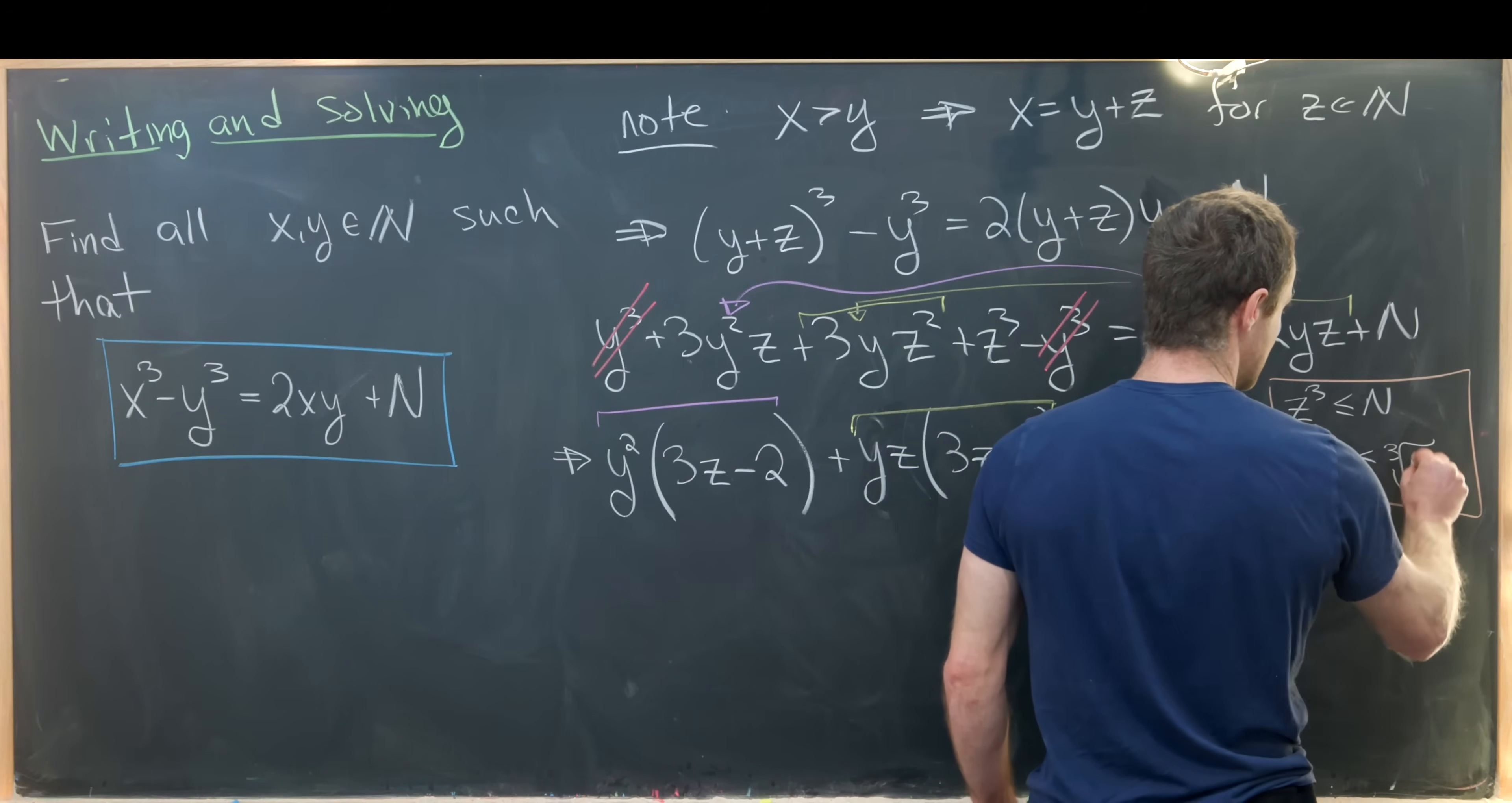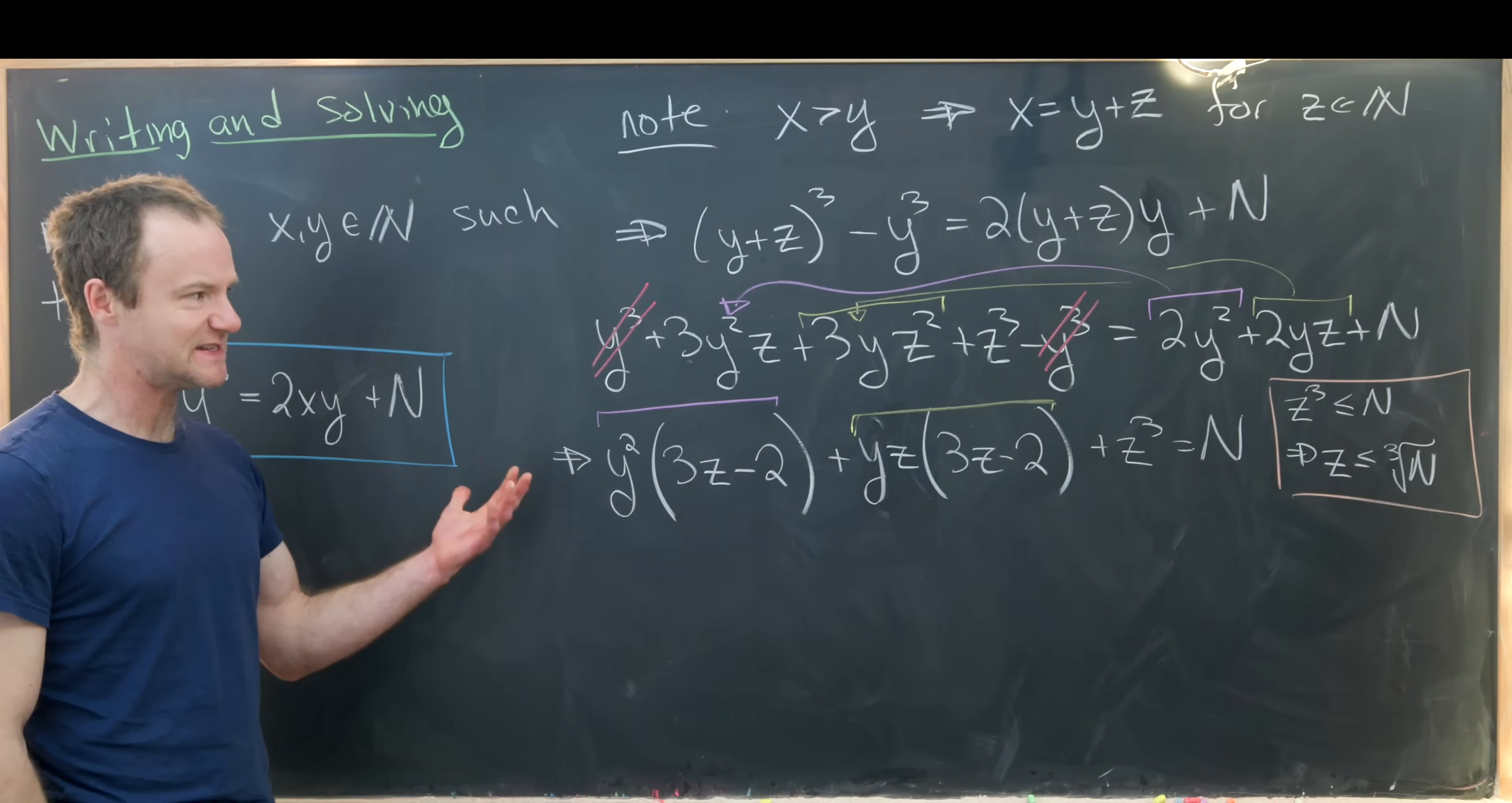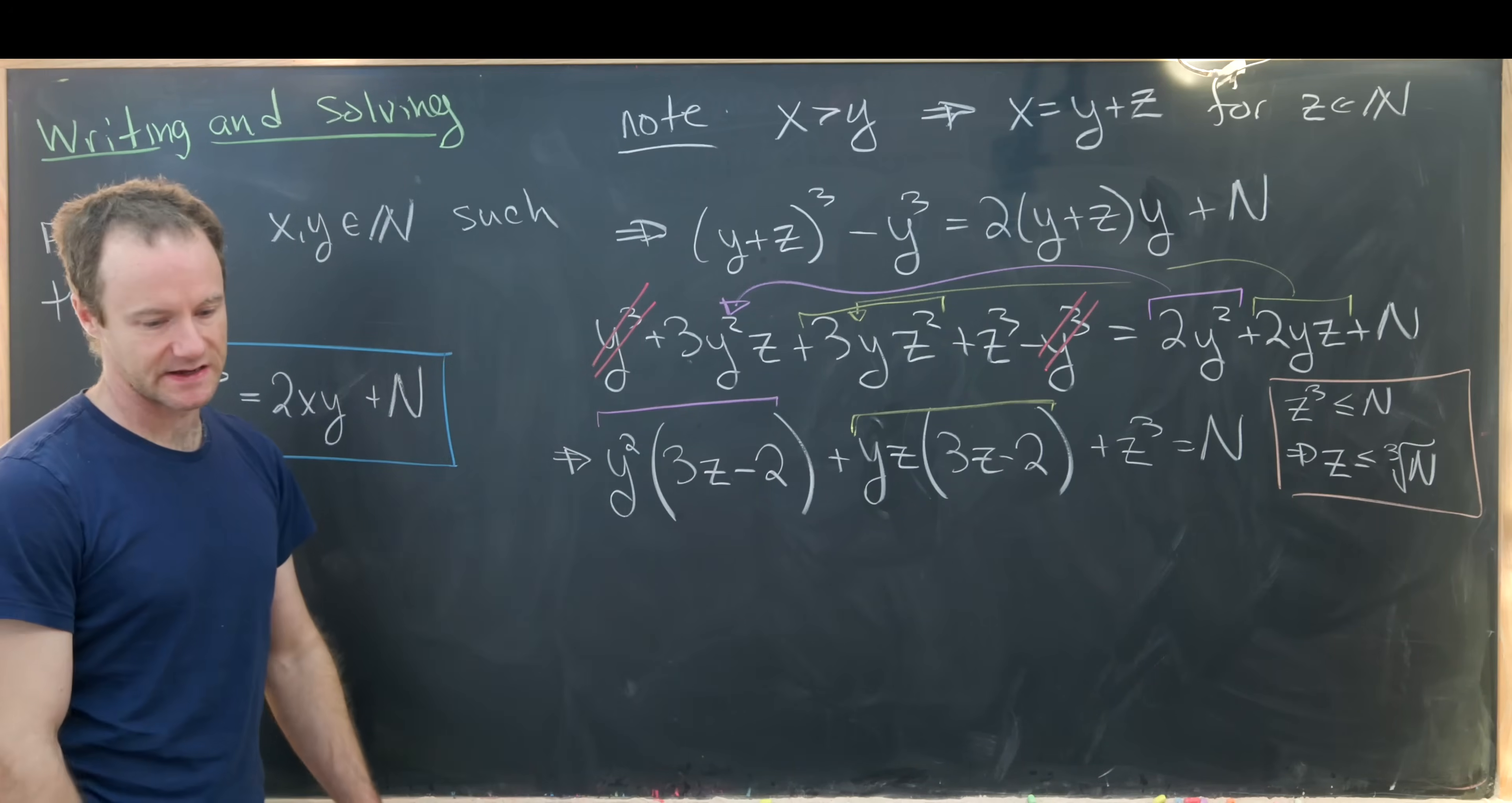So z³ is less than or equal to N, which tells us that z is less than or equal to the cube root of N. So that gives us a bound there.